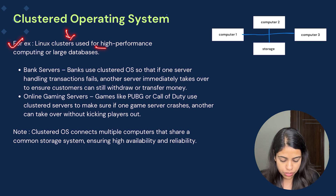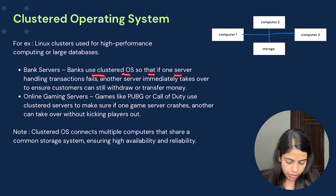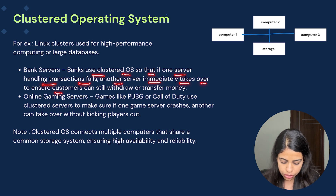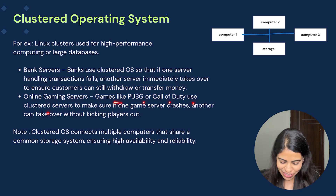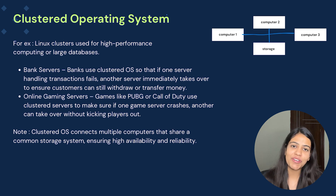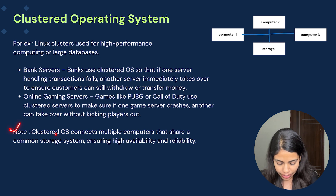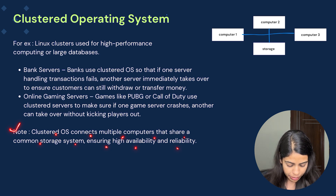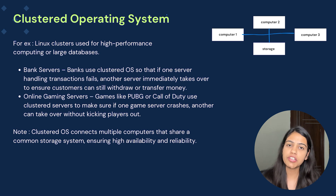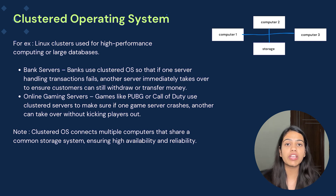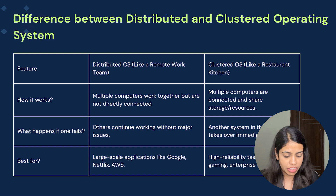For example, Linux clusters are used for high-performance computing or large databases. Banks use clustered OS so that if one server handling transactions fails, another immediately takes over to ensure customers can still withdraw or transfer money. Games like PUBG or Call of Duty use cluster servers so that if one game server crashes, another can take over without kicking players out. Note: clustered OS connects multiple computers that share a common storage system, ensuring high availability and reliability. The basic difference is that in distributed OS, computers have their own resources, while in clustered OS all computers are linked and share common resources.